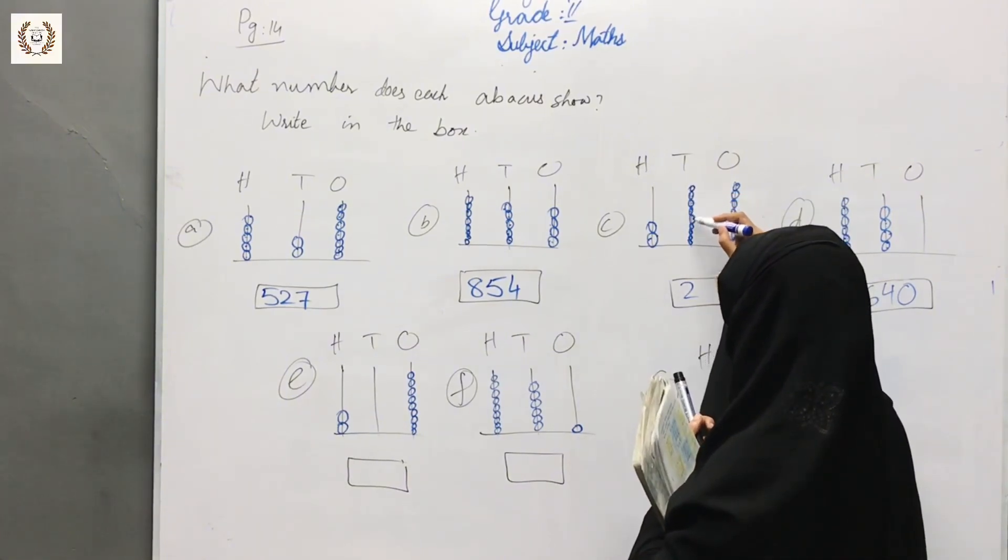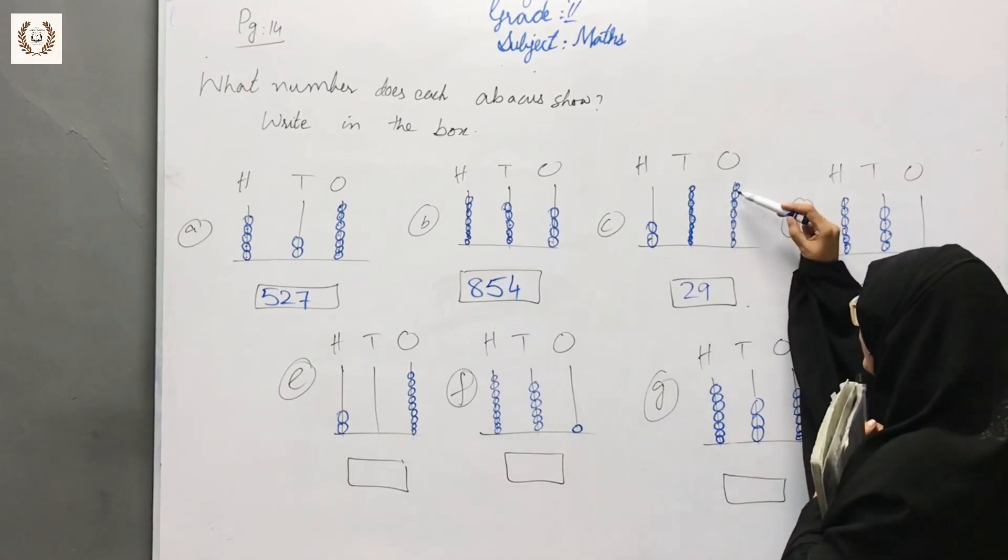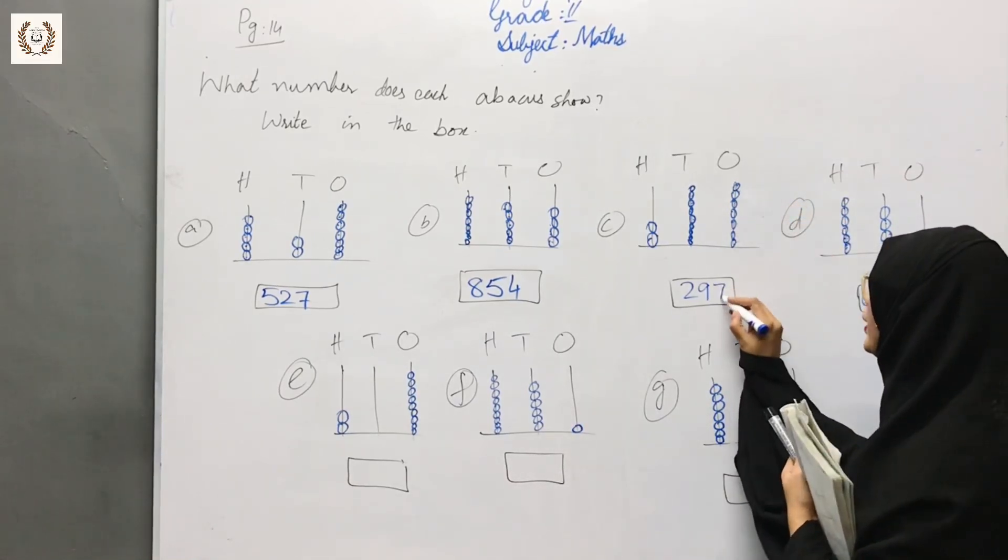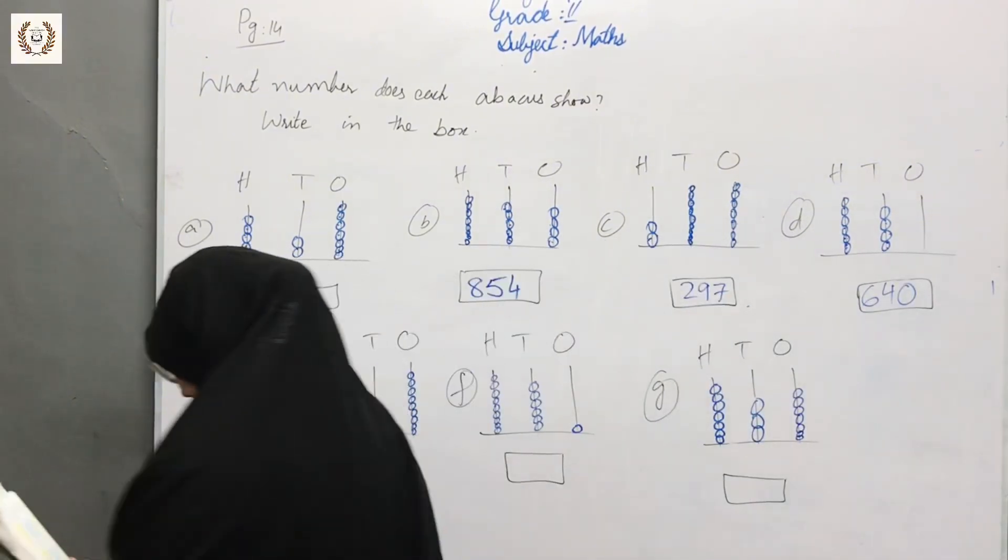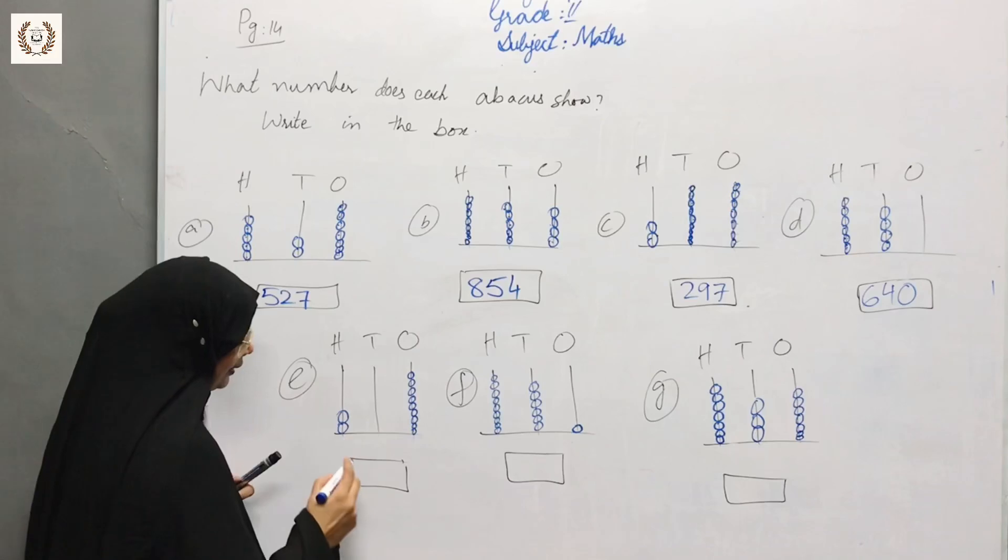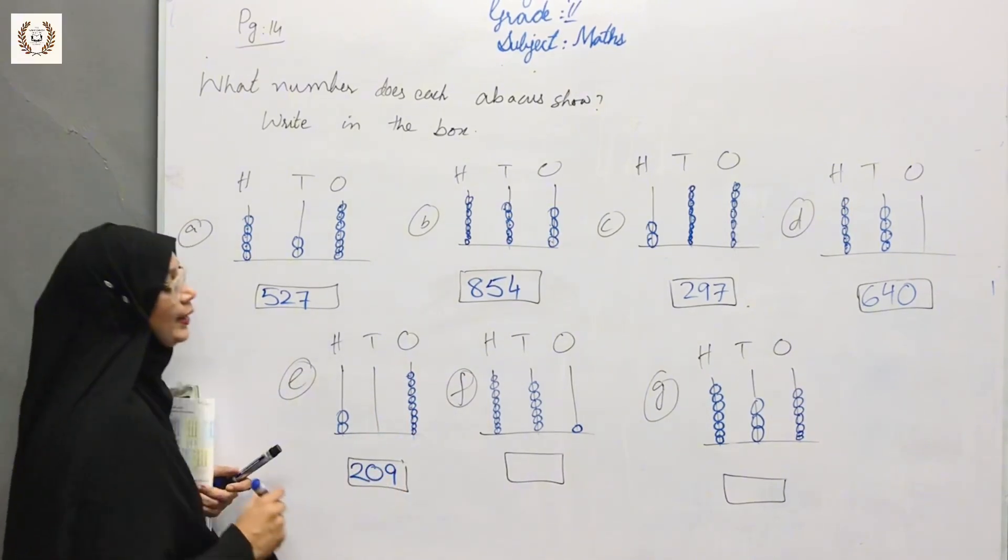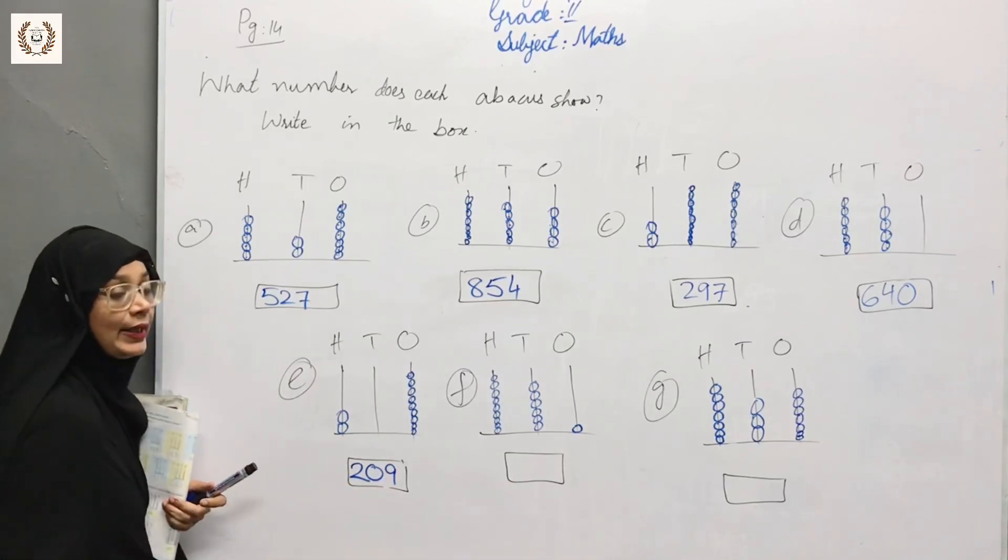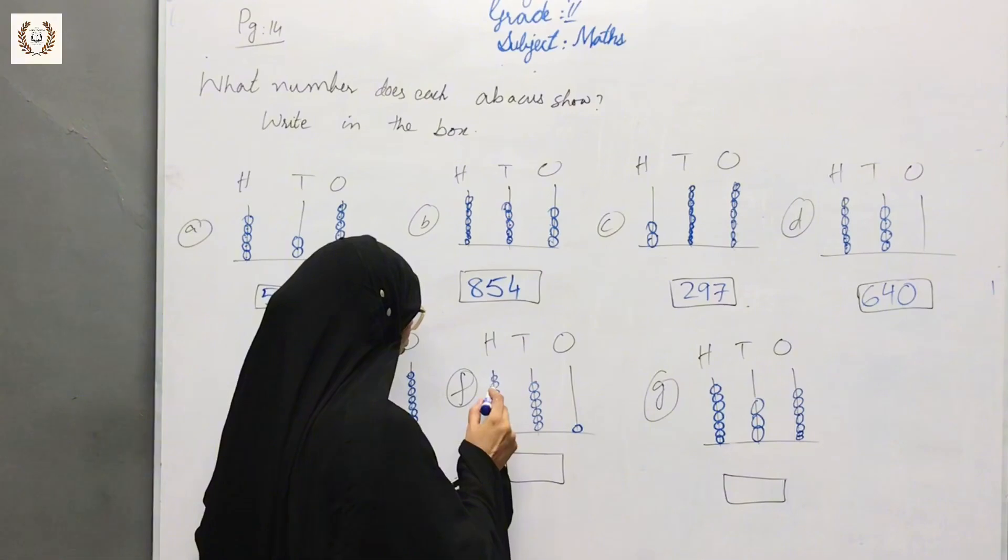Counting hundreds: 1, 2, 3, 4, 5, 6, 7, 8, 9. That's 200. Ones: 1, 2, 3, 4, 5, 6, 7. Two hundred ninety-seven. Now hundreds: 1, 2, 3, 4, 5, 6, 7, 8, 9. Two hundred. Zero tens and nine ones: 209.